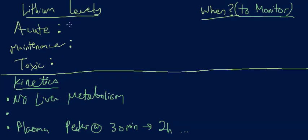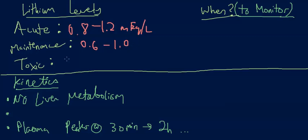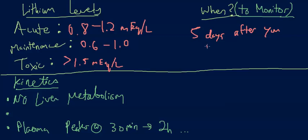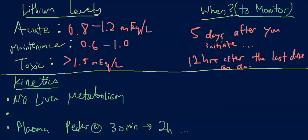Acute lithium levels: the ideal range when initiating is 0.8 to 1.2 mEq/L. For maintenance, it's lower: 0.6 to 1.0 mEq/L. Toxic levels are above 1.5 mEq/L — that's when overdose effects appear. Levels should be monitored five days after initiating therapy, with the sample taken 12 hours after the last dose on day five.